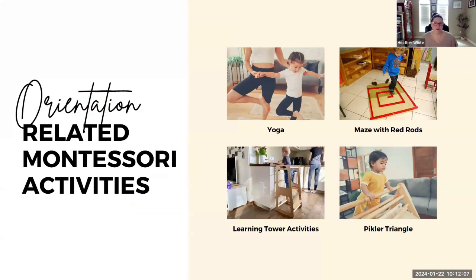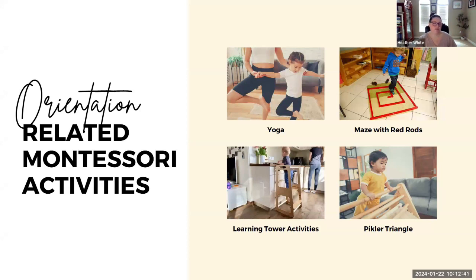If a child is in an orientation schema, some things they might enjoy include yoga; using the red rods — a material found in all Montessori early childhood classrooms — to create a maze and walk through it; and learning tower activities, which help the child be independent and access the counter in the kitchen or bathroom for care-of-self activities like brushing their hair or teeth, or helping cook. It gives them a different perspective by lifting them up.